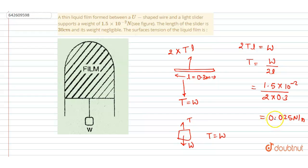This is our answer. The slider is supporting this weight, which is supported by the surface tension equal to 2TL. Hence we got this T value.